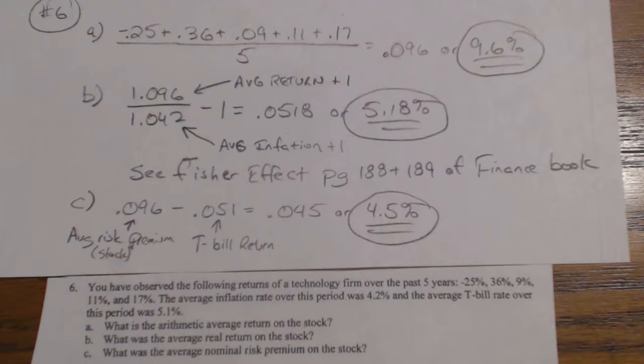Okay, this is page 68, problem number 6. You have observed the following returns of a technology firm over the last 5 years: minus 25%, 36%, 9%, 11%, and 17%. The average inflation rate for this period was 4.2%, and the average T-bill rate over the time period was 5.1%. Remember when they tell you the average T-bill rate, that's what they consider a rate without risk, a riskless rate, because it's just T-bills guaranteed by the government.